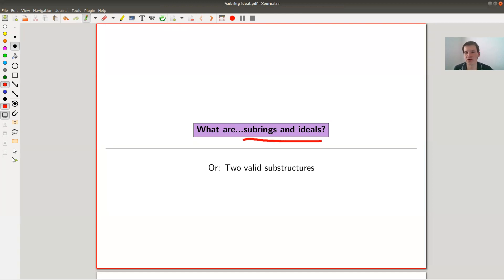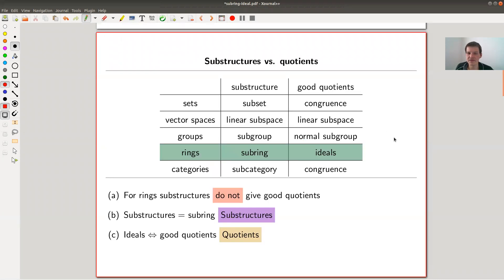More obviously focus on ideals because the notion of subring is kind of obvious, but they are both valid substructure things. And the story is very similar to the one that you might have seen from subgroups and normal subgroups. It's just in ring theory, not in group theory. In particular, the overall picture looks kind of the same.